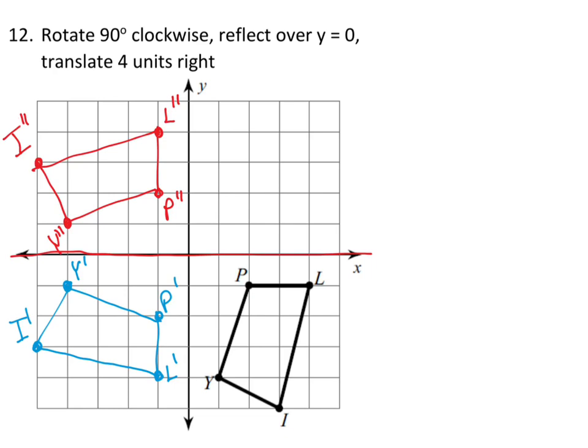And now I need to finish up with translating 4 units to the right. Let's do green. Green is a good color to finish up. 4 units to the right. So let's take care of everything. Move it right. 4, 1, 2, 3, 4. And there's my l triple prime.